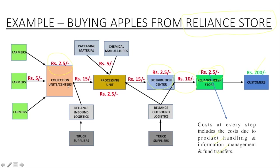All these prices are on a per kg of apple basis. The company spends 15 rupees in transporting the apples from collection centers to the processing unit. In the processing unit, there is a spend of 5 rupees on suppliers for packaging materials and chemicals, and 2.5 rupees in storing and processing. From the processing unit to the distribution center, transportation takes 15 rupees, followed by 2.5 rupees in maintaining the distribution center and storing the apples, then a transportation cost from the distribution center to the Reliance store, and 2.5 rupees in stocking the apples at the Reliance store.